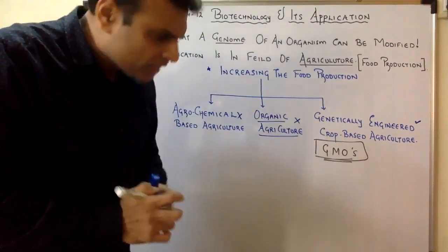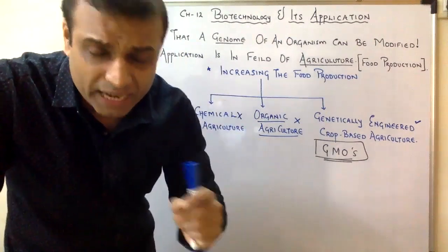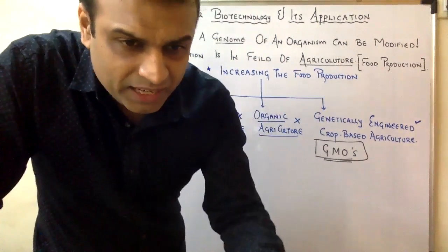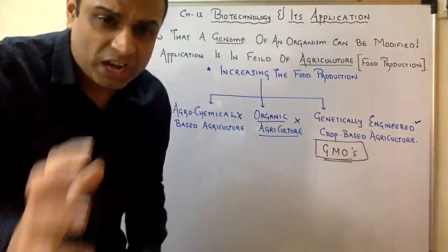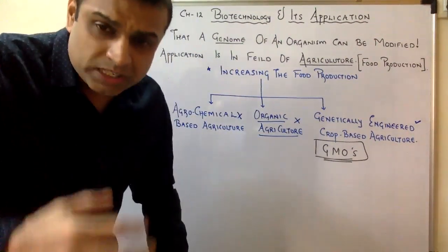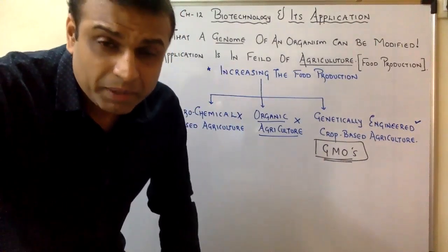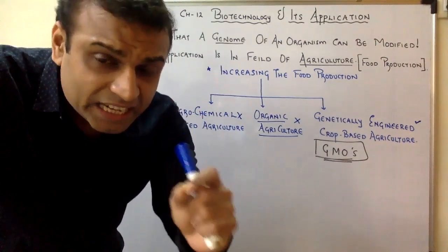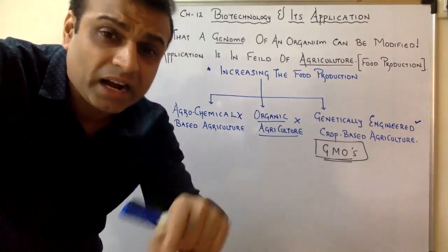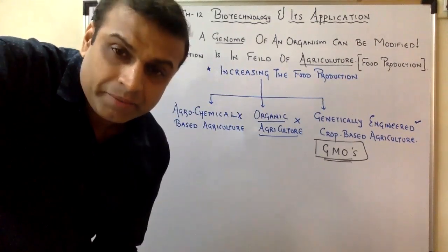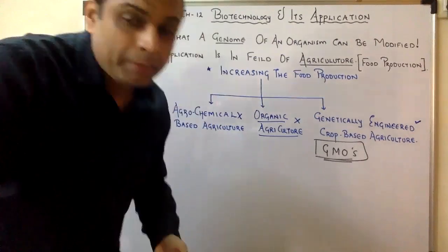For example, we have a rice variety called Golden Rice, which is Vitamin A rich. We all know that carrots are a source of Vitamin A, but carrots are quite expensive and not affordable for 70% of the Indian population living in villages. So we have created this rice which is Vitamin A rich. We have also made spinach which is Vitamin C rich, since Vitamin C is normally found in lemon. All this has been done through genetic engineering.